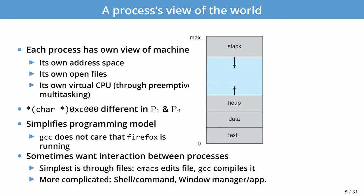Sometimes we might want to interact between multiple processes, and there are multiple ways to do that. The simplest is using files to communicate — like when you edit code in Emacs, save it, and then run your compiler. But there are many other ways using all kinds of APIs that we'll discuss later in the term.